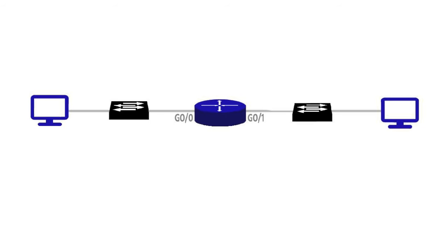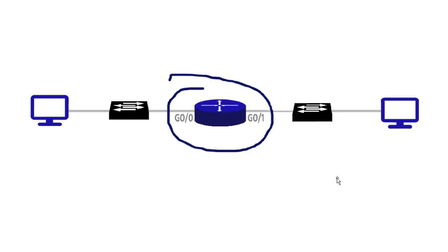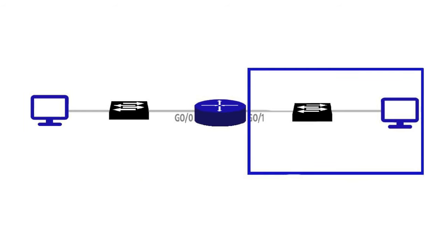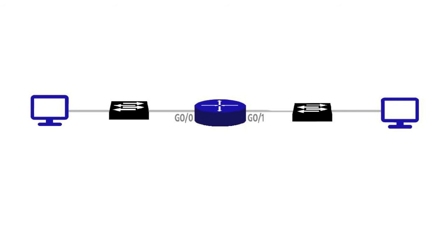We're going to see what happens to this data as it travels through the network from the host computer on the left to the host on the right. We need to identify what's going on with these two different networks connected to each other. We have a router — a layer three device — in the center. We have a LAN on the left-hand side of the router with a layer two switch, and another LAN on the right-hand side with a switch, and the two LANs are divided by the layer three device, the router in the middle.